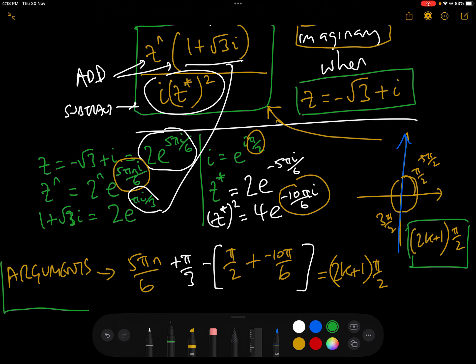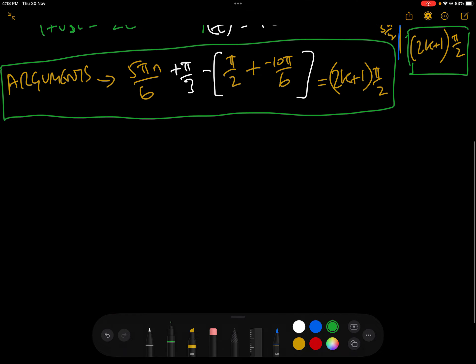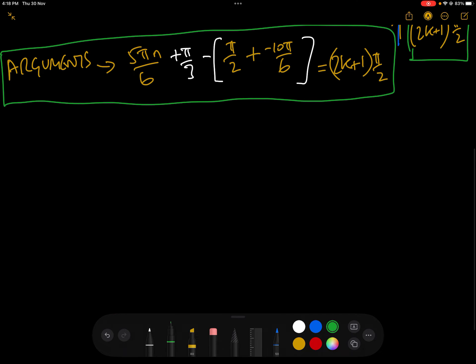So we have now an equation just in the arguments. All we have to do now is solve that equation. Let's clear this up. We have 5 pi n over 6. Let's put everything over 6 to make it easier. Add 2 pi over 6, minus 3 pi over 6, add 10 pi over 6.